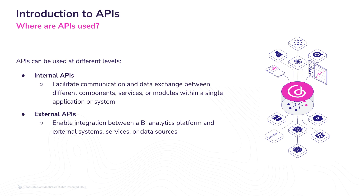External APIs enable integration between a BI analytics platform and external systems, services, or data sources. These APIs allow the platform to access functionalities or retrieve data from third-party applications or services. For instance, a BI platform may integrate with external APIs of social media platforms, marketing tools, or cloud storage services to gather data for analytics. External APIs expand the capabilities of the BI platform by leveraging external resources and fostering interoperability with other systems.